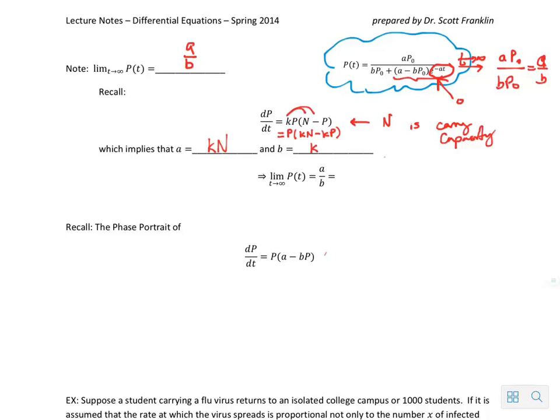Which means that if the limit of p of t is a over b, that's k n over k or n, which is exactly what you would expect it to be, it's the carrying capacity.